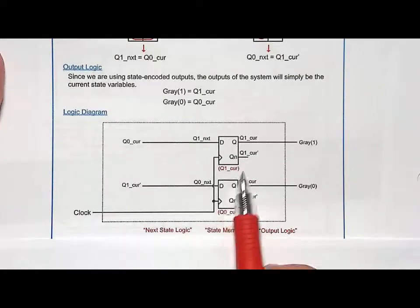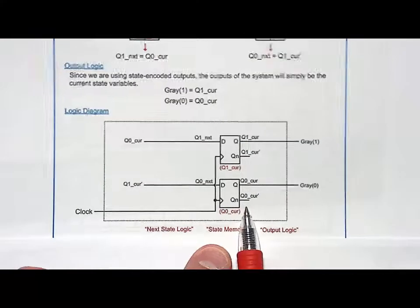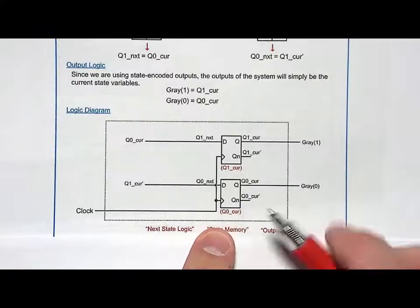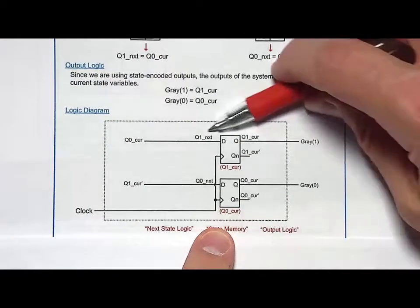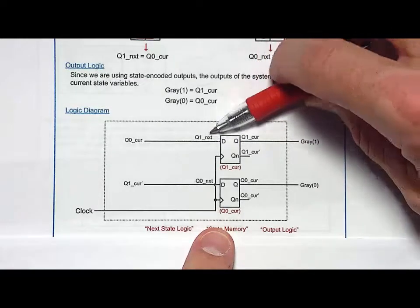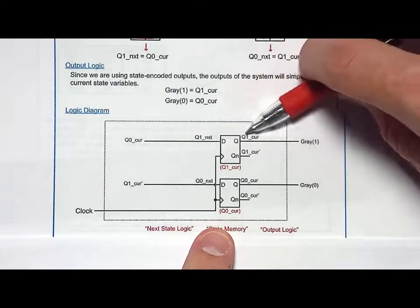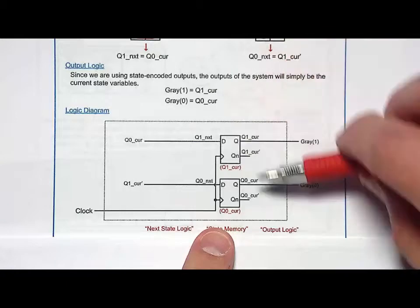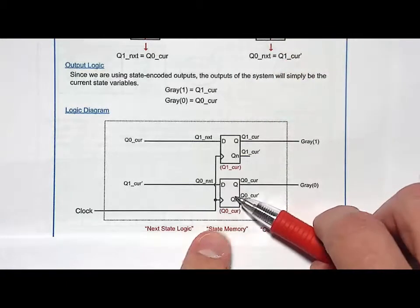And now I go to my final logic diagram. My state memory is 2 d flip-flops like we said. But not just 2 d flip-flops. 2 d flip-flops where I assigned which variable or which bit they're going to represent. So this is q1next. q1cur is on this d flip-flop. And then q0next and q0cur on this d flip-flop.